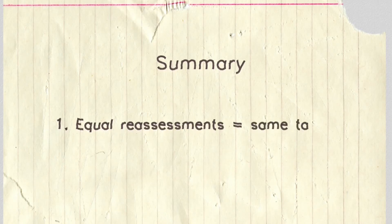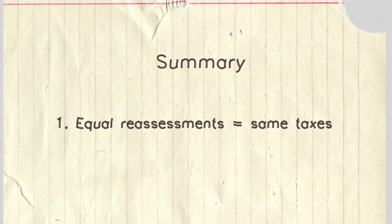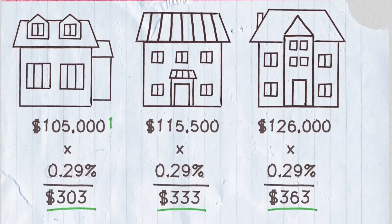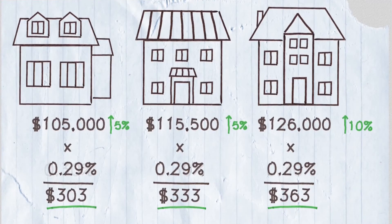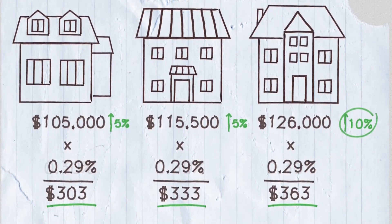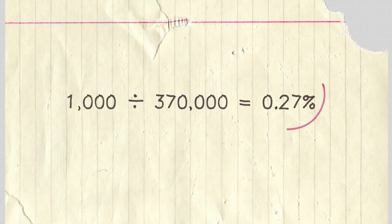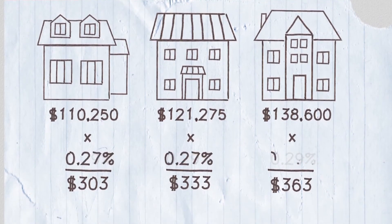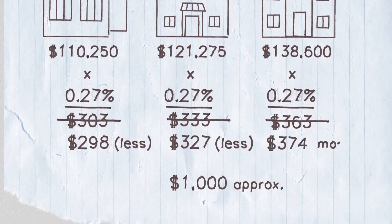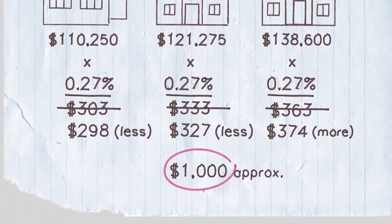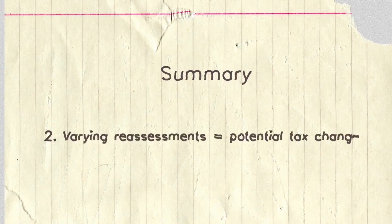Let's recap: property taxes are based on what a home is worth. If reassessments all increase equally, then everyone pays the same taxes as before. Now, let's say another four years has gone by and these homes are reassessed. During this time, the house on the right became more valuable in the market than the other two. The total value of all the homes has increased, which means the town has to calculate a new tax rate. With this new tax rate, the first two homes will actually pay less than the home on the right that was reassessed at a higher value. Since the cost of services hasn't changed, the town doesn't need to collect more property taxes. However, since property taxes are based on a home's value, those taxes could potentially go up or down based on the rest of the homes.